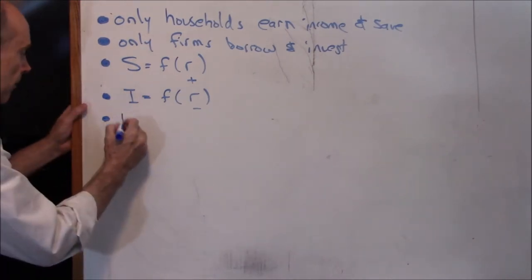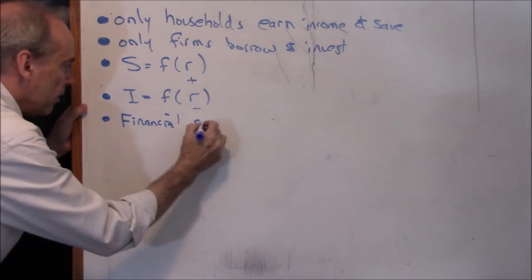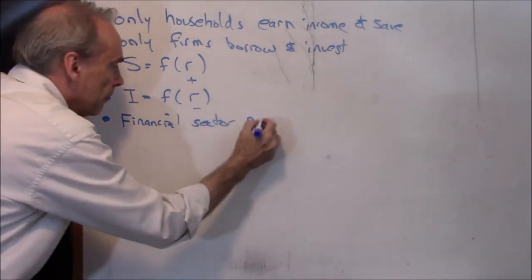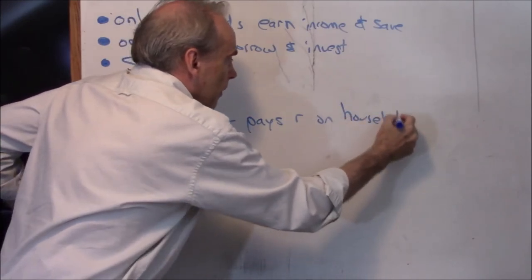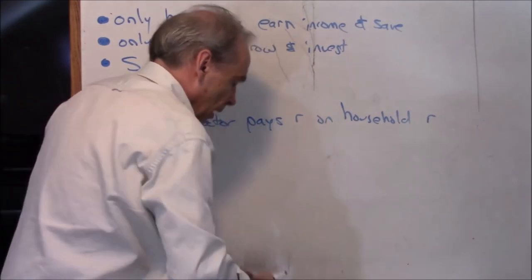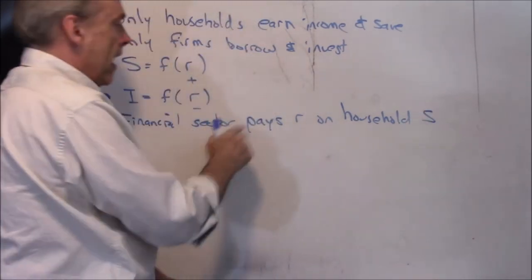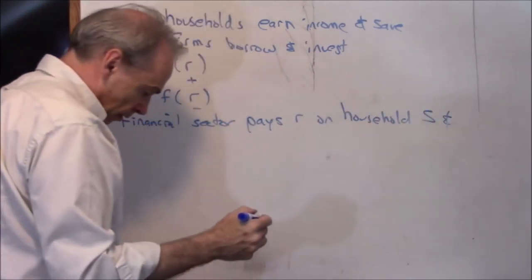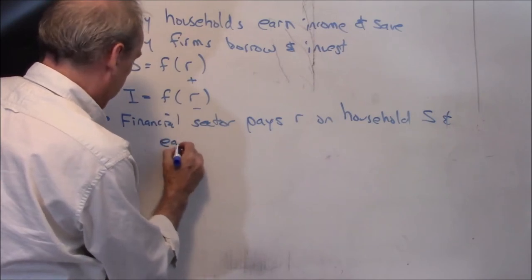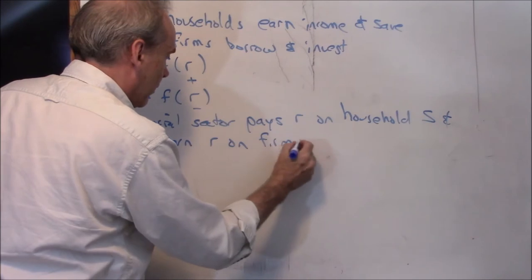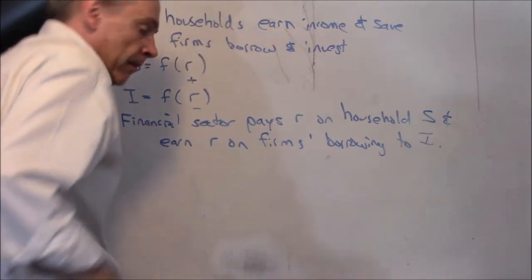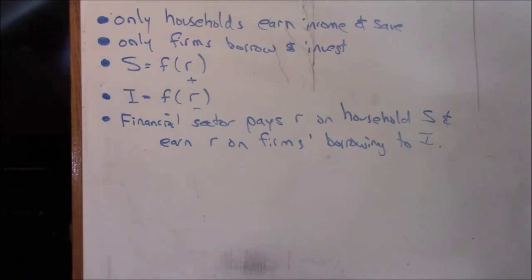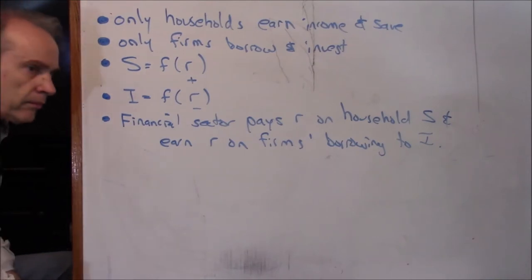And here's our fifth important assumption: the financial sector pays R on household savings and earns R on firms' borrowing to invest. So, what does the financial sector do in this situation? It pays interest on household savings, and then it earns interest on firms borrowing to invest. This is the world we're setting up in this neoclassical model.